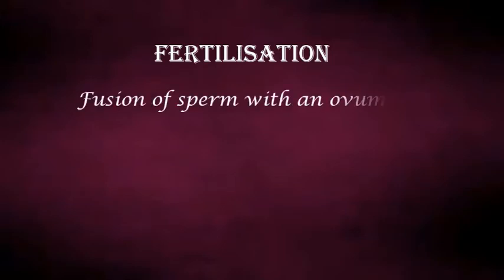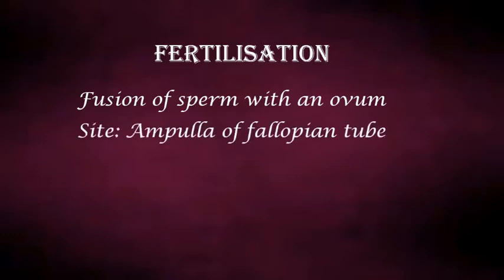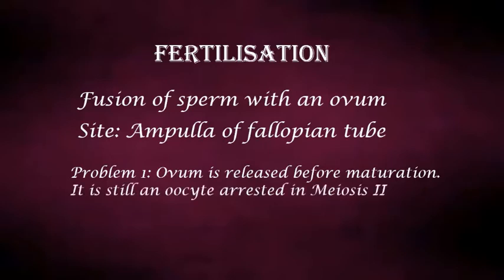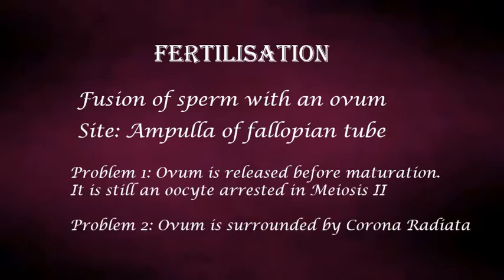Fertilization is the fusion of sperm with an ovum. The site of fertilization is the ampulla of the fallopian tube. There are two problems associated with this: problem one is that the ovum is released before maturation. When the ovum is released, it is still in the secondary oocyte stage — meiosis 2 is not yet complete, so the nucleus in the ovum is not yet haploid.